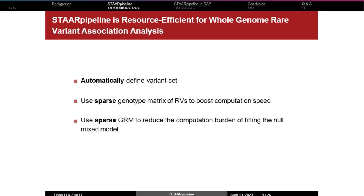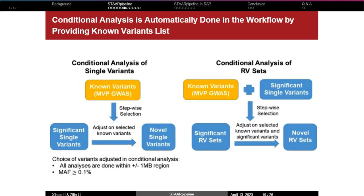The STAR pipeline is also resource-efficient for whole genome rare variant association analysis. It automatically defines variant sets, uses the sparse genotype matrix of rare variants to boost computation speed, and uses a sparse GRM to reduce the computational burden of fitting null models. By taking advantage of the sparse structures of the genotype matrix of whole genome sequencing studies, the STAR pipeline solves the computational scalability challenge for analyzing this huge dataset.